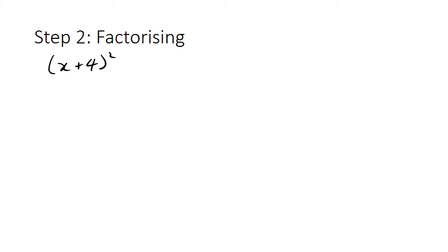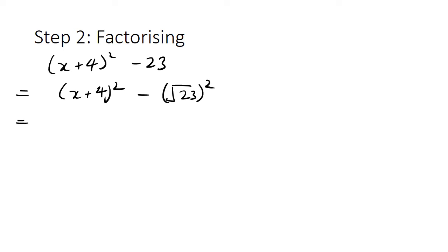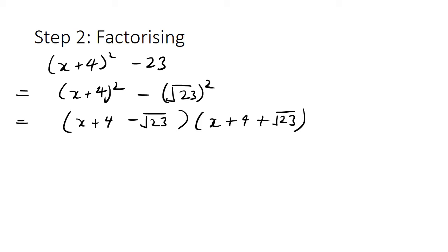Returning to our example, we've got (x+4)² minus 23. To write that as a difference of squares, the first expression remains as it is and the minus 23 we write as (√23)². Now we've got a difference of squares, so we can factorize to get (x+4 - √23)(x+4 + √23). We check if we can simplify further — in this case, √23 can't be combined with the 4, so that would be our complete solution.